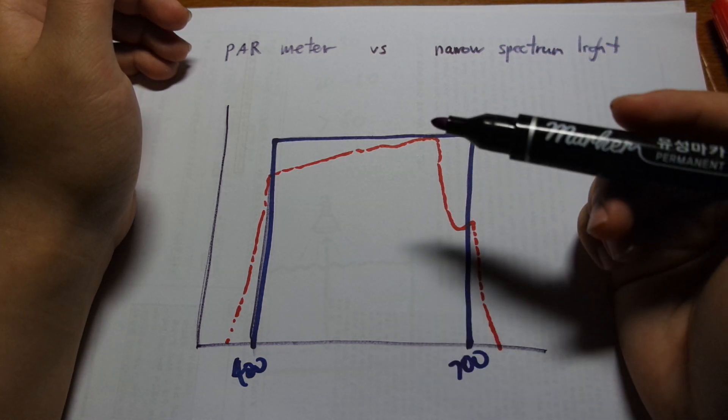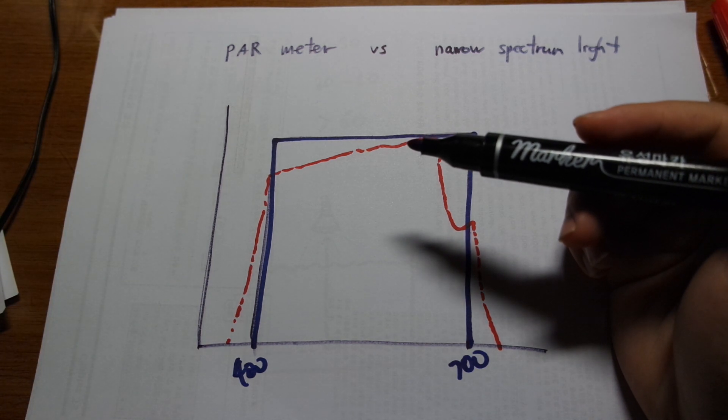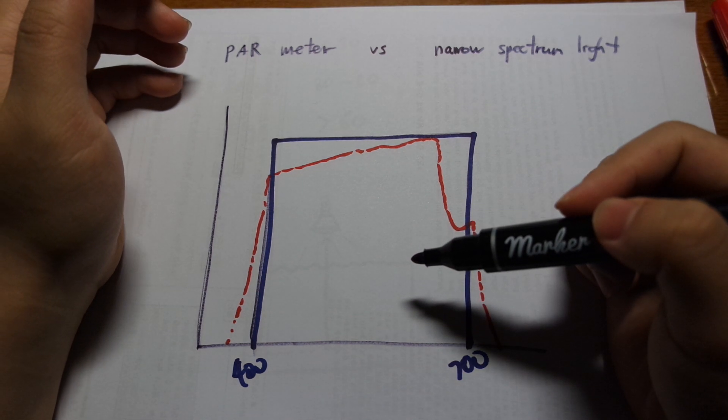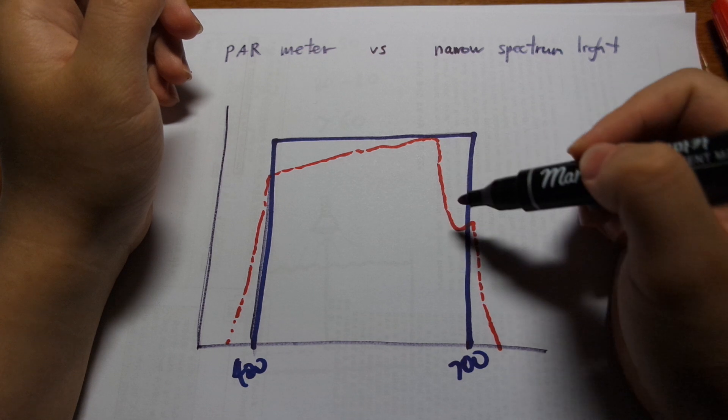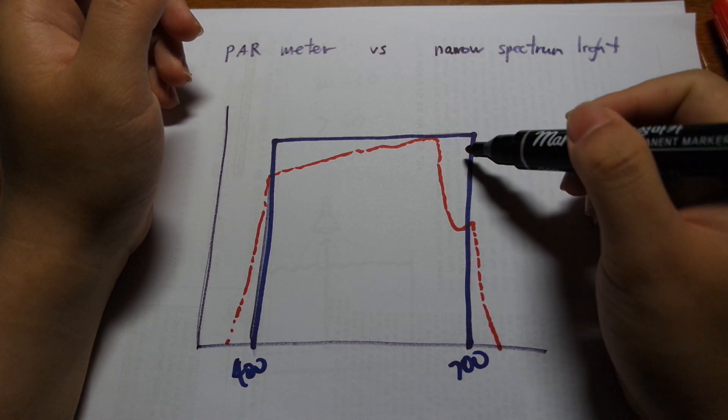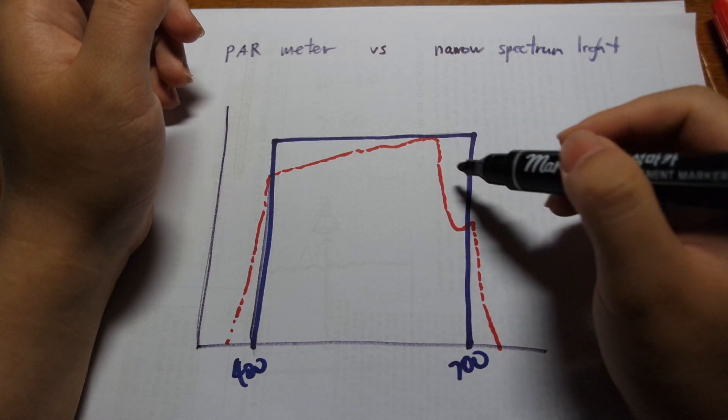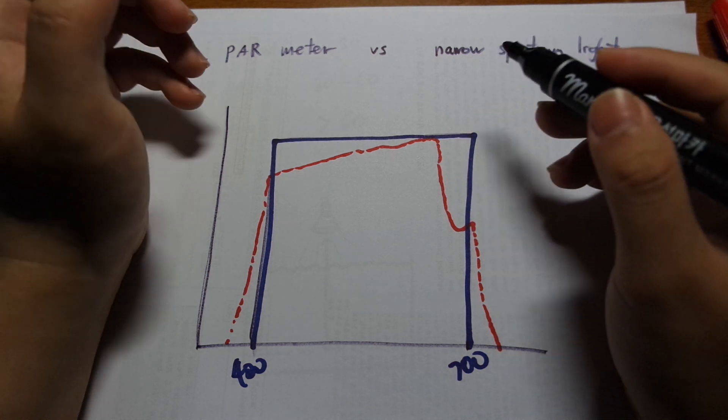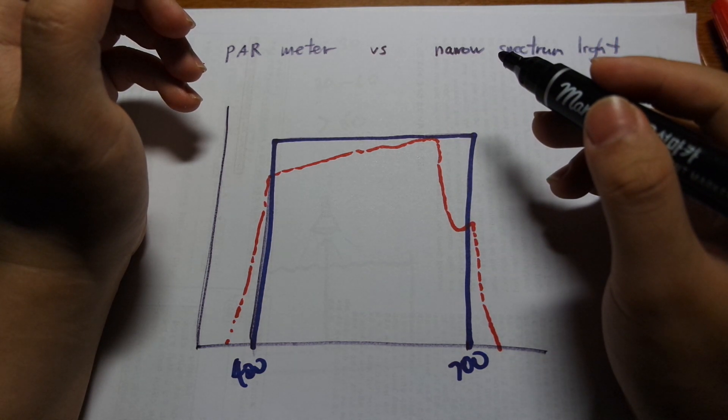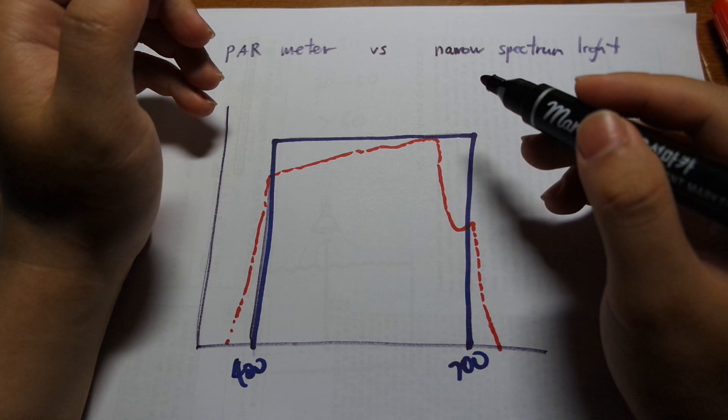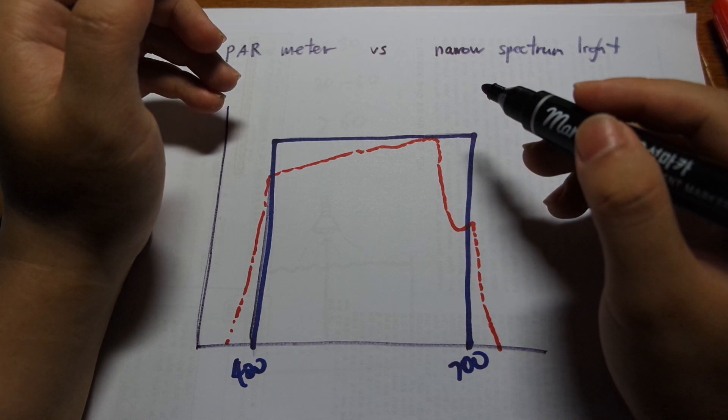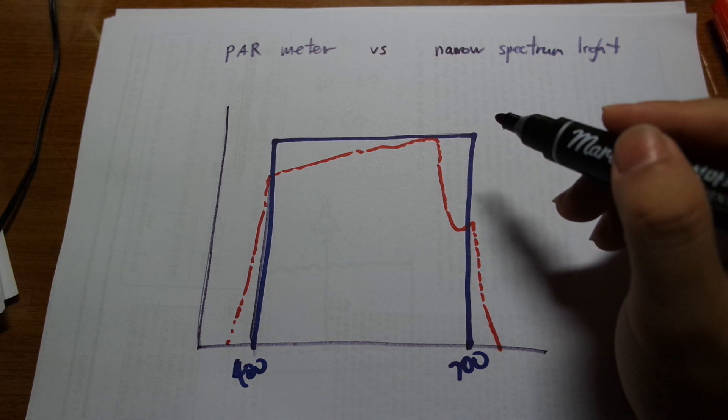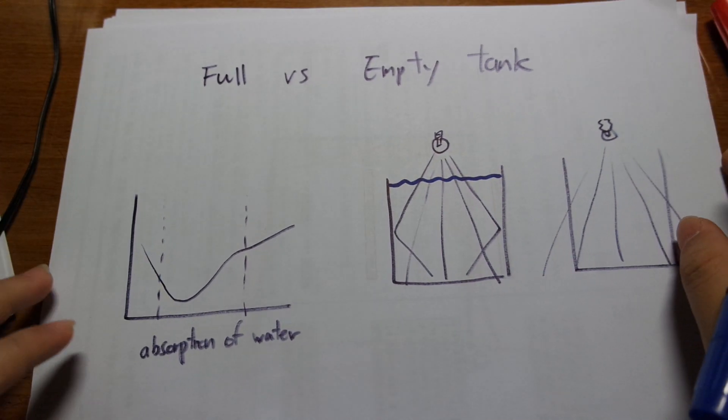So actual PAR meters, because they're devices, and depending on how expensive and good of a PAR meter you have, they won't pick up certain wavelengths as effectively as other wavelengths. So if you say you have a light that has a lot of red in it, if you measure it with this PAR meter, it's not going to pick up that red light very well because just the limitations of the device itself. So you can have the exact same light, and you can have different PAR meters, and they can give you quite differing measurements depending on the spectrum of the light and how the PAR meter actually picks up the light. So depending on the PAR meter, the level can be quite different. That has to be taken into consideration.